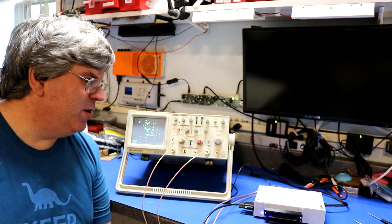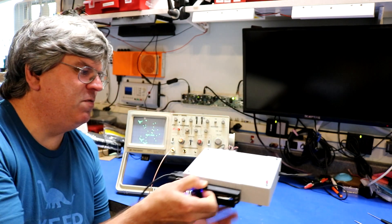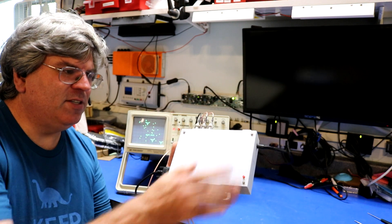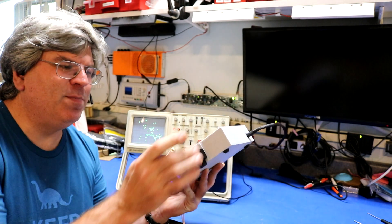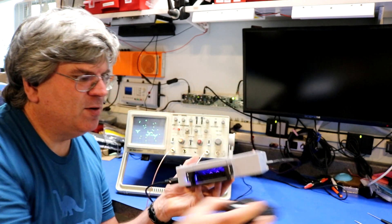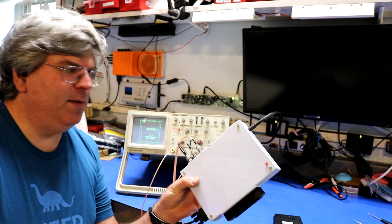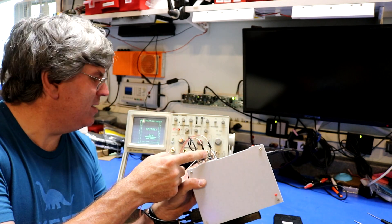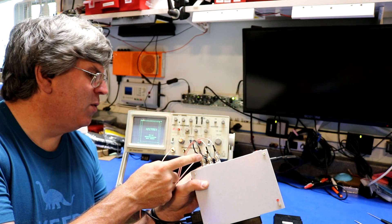I will do some close-up views of it later. The Scopetrex prototype itself is right here. I mounted it in this case, and I'll open it up in a moment. I did design the 3D printed case myself. It has a cartridge slot — you can plug cartridges in through the front. It has three jacks coming out the back: one for X, one for Y, and one for Z.